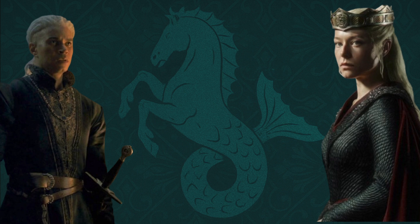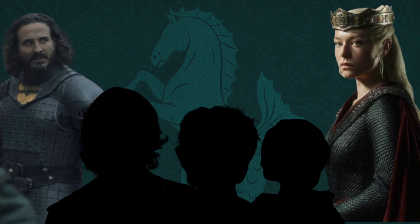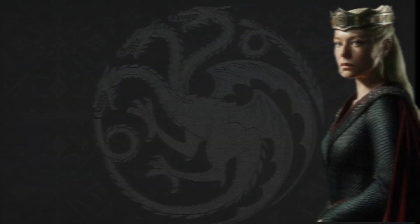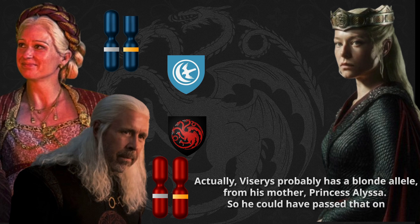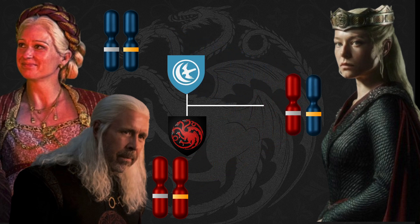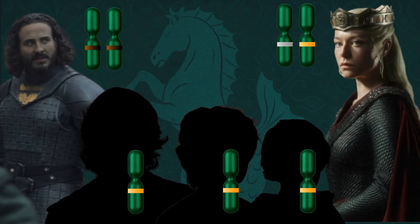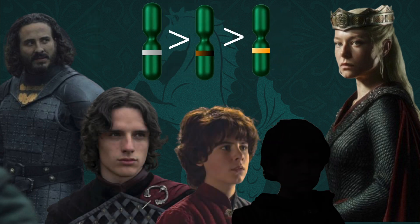What about Rhaenyra's first three sons — Jacaerys, Lucerys, and Joffrey? We know their father is probably Harwin Strong, but even then, shouldn't they inherit the Valyrian allele from their mother? Well, not necessarily. Rhaenyra is the daughter of King Viserys and Queen Aemma, who was born Aemma Arryn. Aemma was the daughter of Roderick Arryn, so we know she has at least one allele that's not Valyrian — probably a blonde allele considering her father. She could have passed that allele along to her daughter Rhaenyra. So Rhaenyra has one Valyrian allele from her father and one blonde allele from her mother. She can only pass one of those to her sons. If each of them got a blonde allele from her and a dark allele from their father, and if the dark allele is second in the hierarchy of dominance, their hair would be dark — which is what ended up happening.